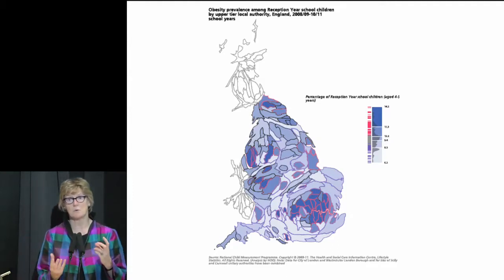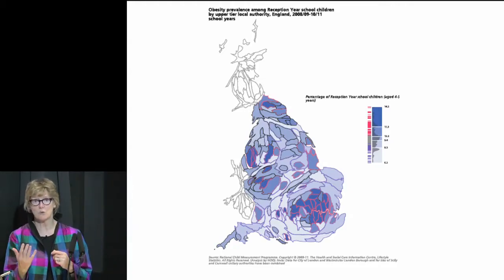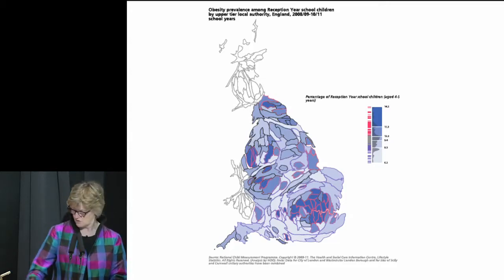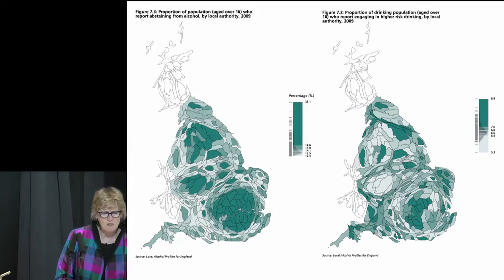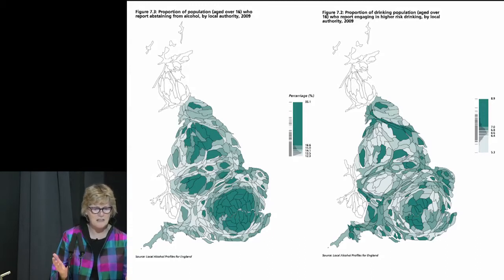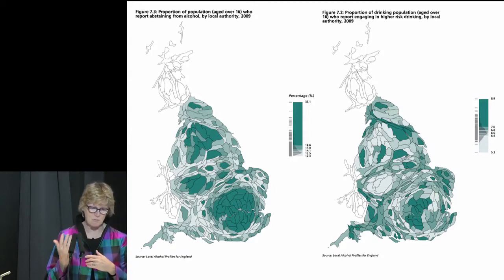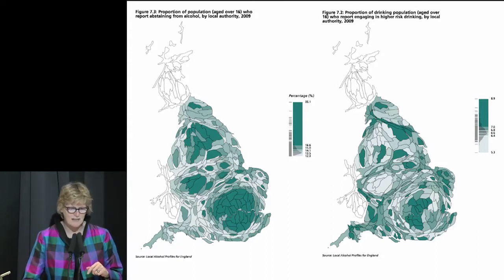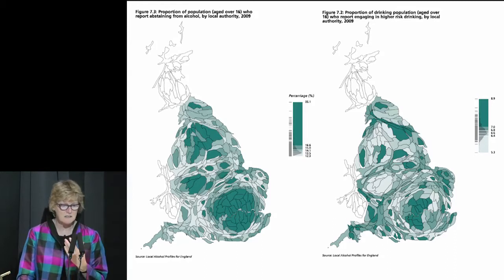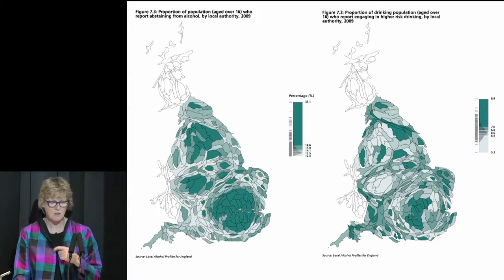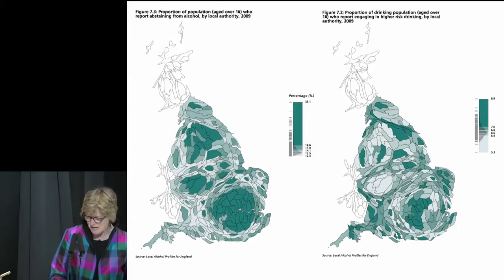It was only when I got the whole report and looked at it that I realised how badly we were doing for the public in the North West, the North East, and Cornwall. Using these maps really brings it home. For example, comparing the proportion of the population aged over 16 who abstain from alcohol with the proportion who engage in higher-risk drinking — you can see some areas where a high proportion are both abstaining and overdrinking, leading you to wonder whether they're directly related.